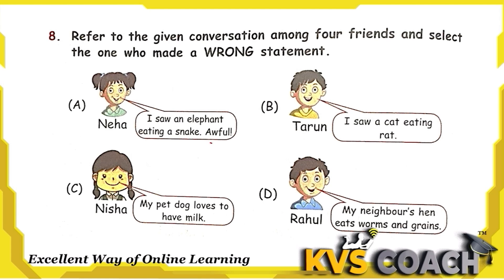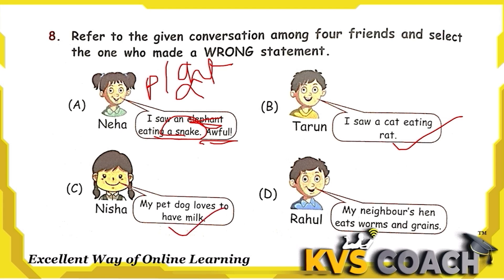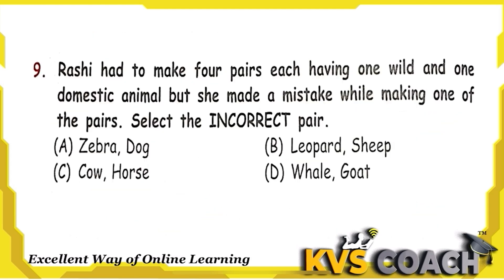Question 8: Four friends made statements — select the one who made a wrong statement. Neha said she saw an elephant eating a snake — this is wrong because elephant is a plant eater only. The other statements — cat eating rat, dog loving milk, and hen eating worms and grain — are all correct. So option A is the wrong statement.